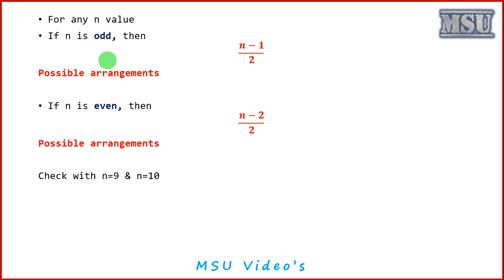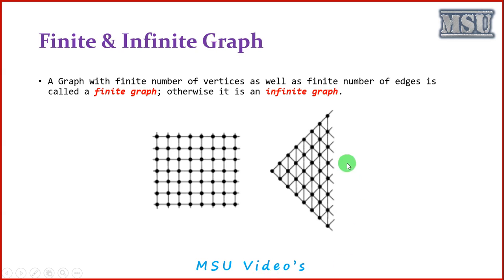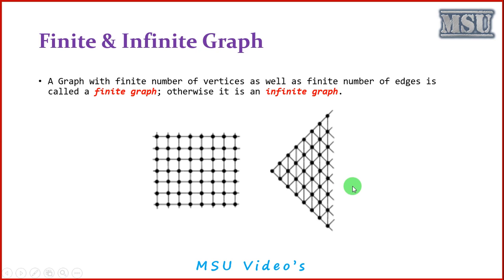If n is an odd number, there exist (n−1)/2 possible solutions. If n is an even number, there exist (n−2)/2 solutions — you can verify with n=9 and n=10. By the name itself you can identify what is a finite graph and what is an infinite graph. A graph with a finite number of vertices and a finite number of edges is called a finite graph; otherwise it is an infinite graph. For our convenience we will concentrate only on finite graphs.